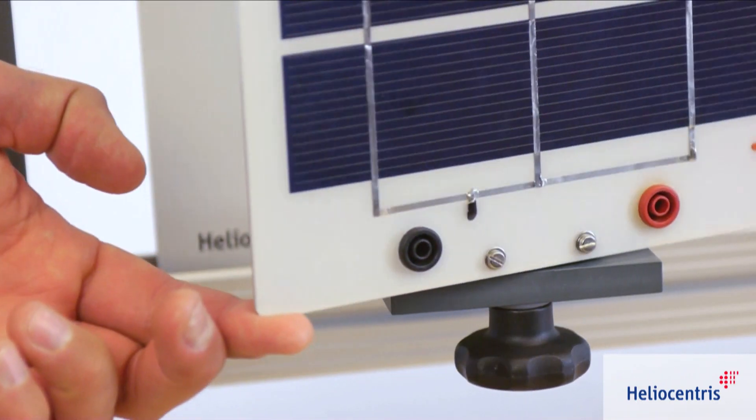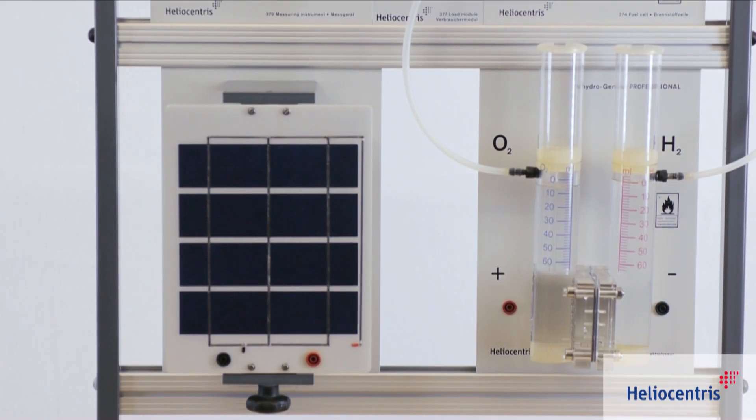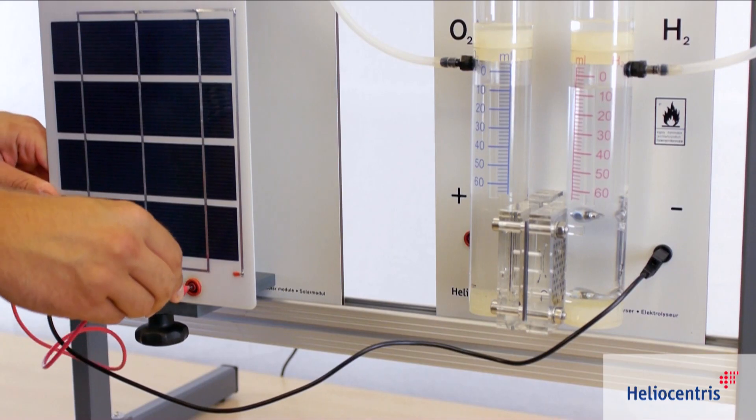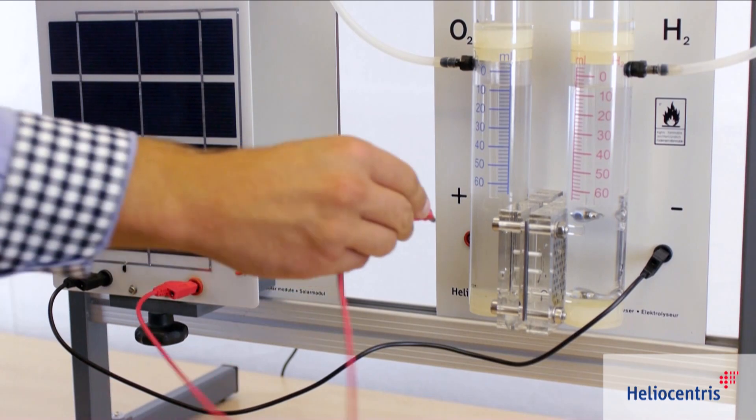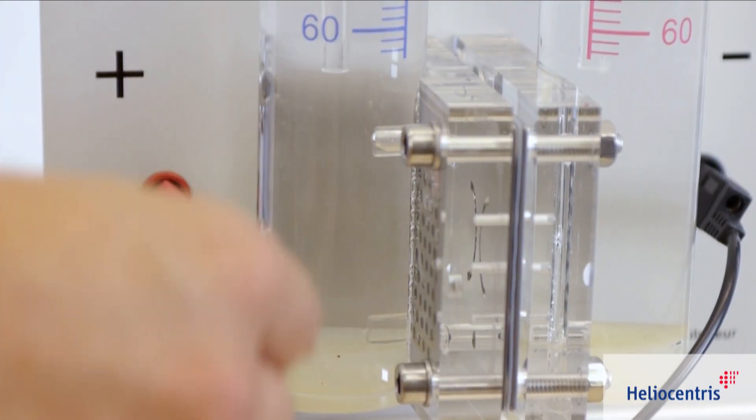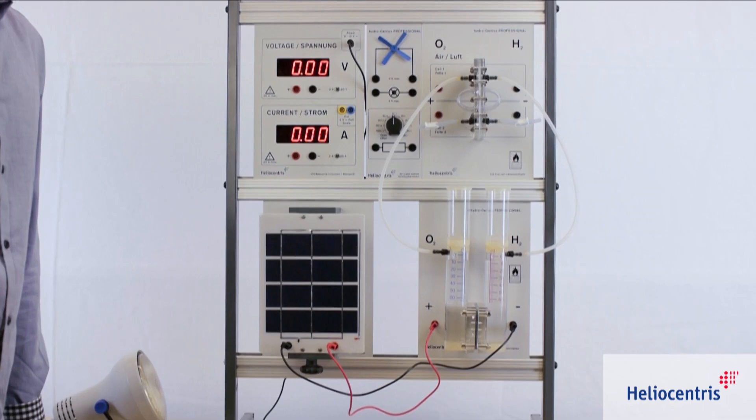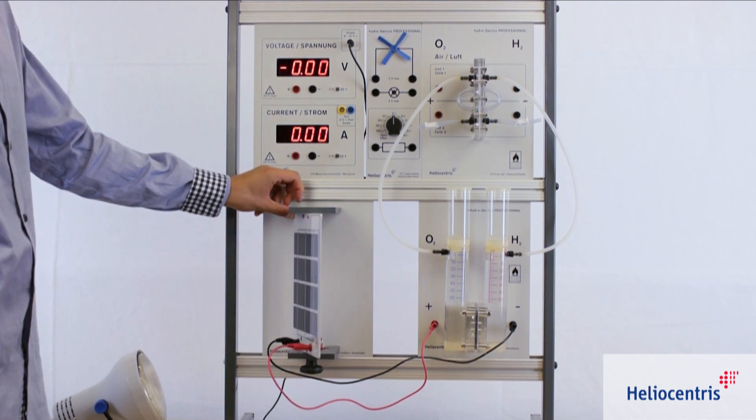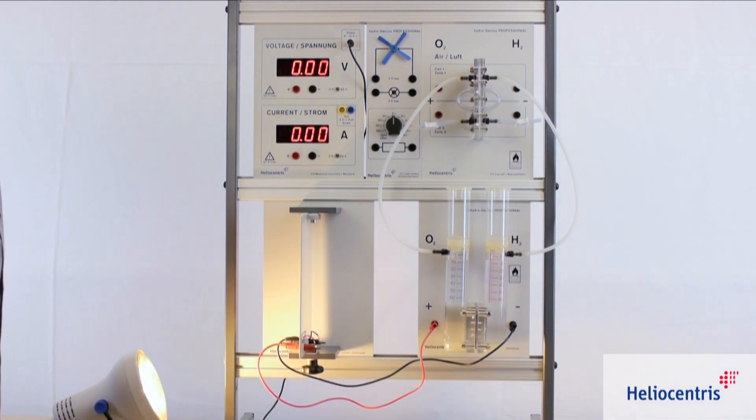The Professional contains the following components. The 4-cell solar panel is used for experiments in photovoltaics and supplies the electric energy for hydrogen production in the electrolyzer. It can also be turned in its frame for easier alignment towards the light source.